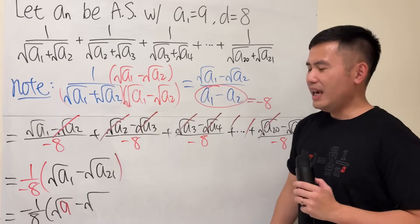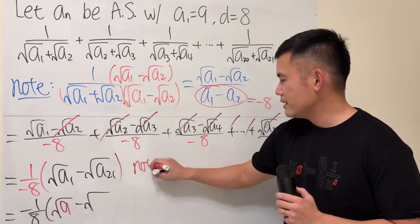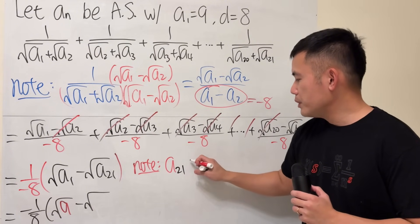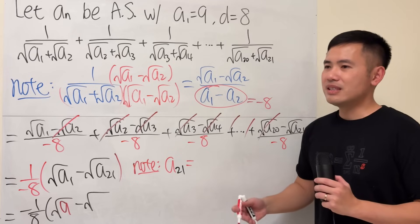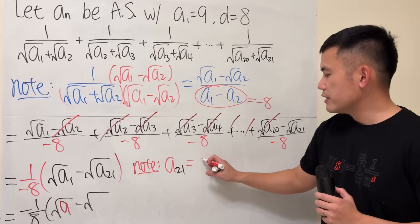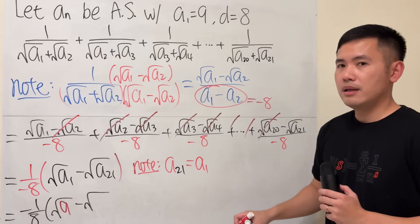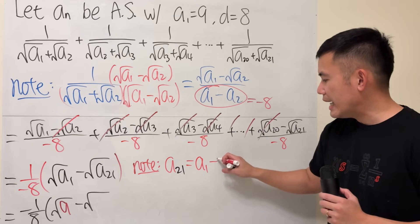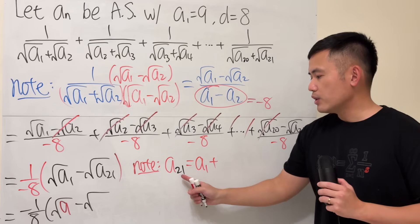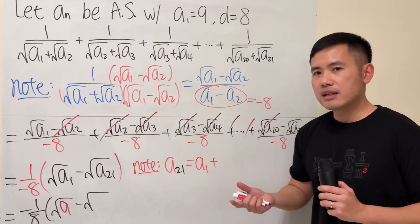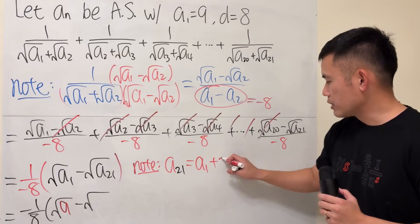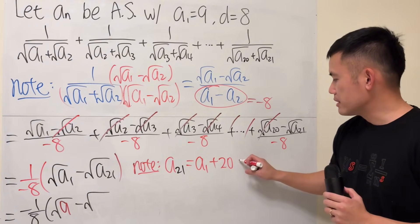So, we'll note again, a21 will be what? Let's think about it instead of just using the formula. What we need to do is, we must start with the first term, which is a1. And then, we have to add the common difference how many times? In order to get to 21, we have to add the common difference 20 times.